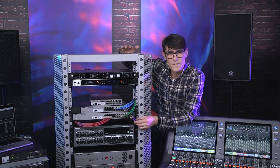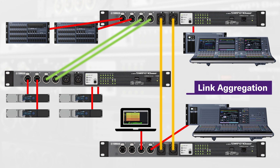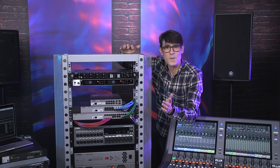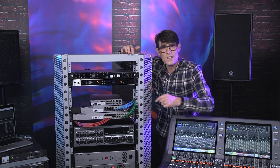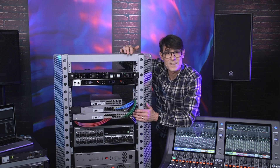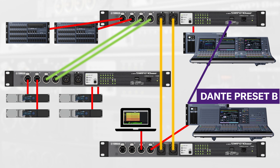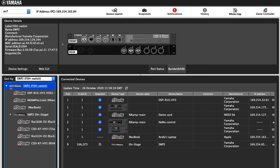First let's revisit link aggregation. Remember this is where more than one cable can travel the same route between switches to increase available bandwidth. Well, if the bandwidth is not needed the additional cables can be used for redundancy. Set up two or three ports in a link aggregation group using the web GUI for the SWR2310 series, or select Dante preset A or B on a SWP1 or SWP2 where the two fiber ports form a link aggregation. Then check the LAN monitor software for the bandwidth percentage of those links — if the sum of the two percentages is 80% or less, it will be safe to run the link with one cable missing.